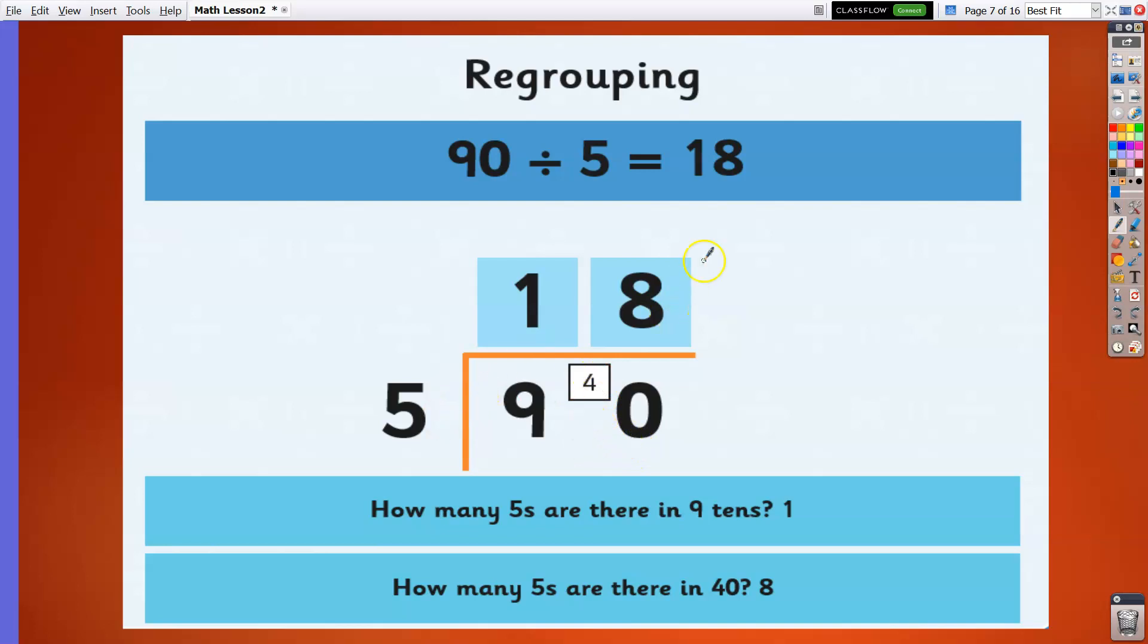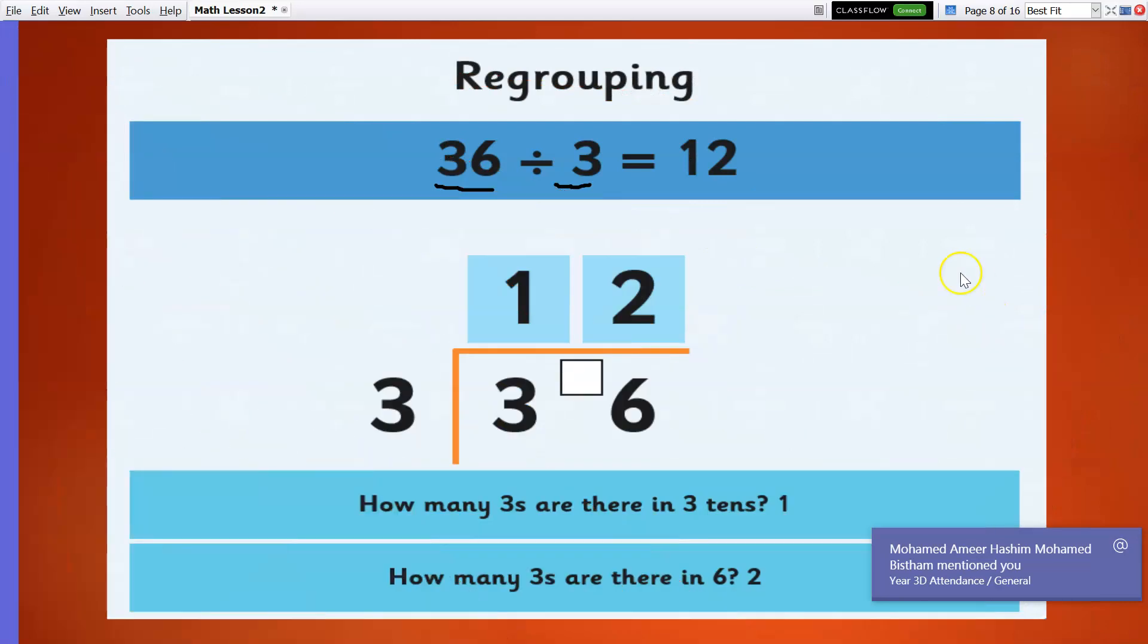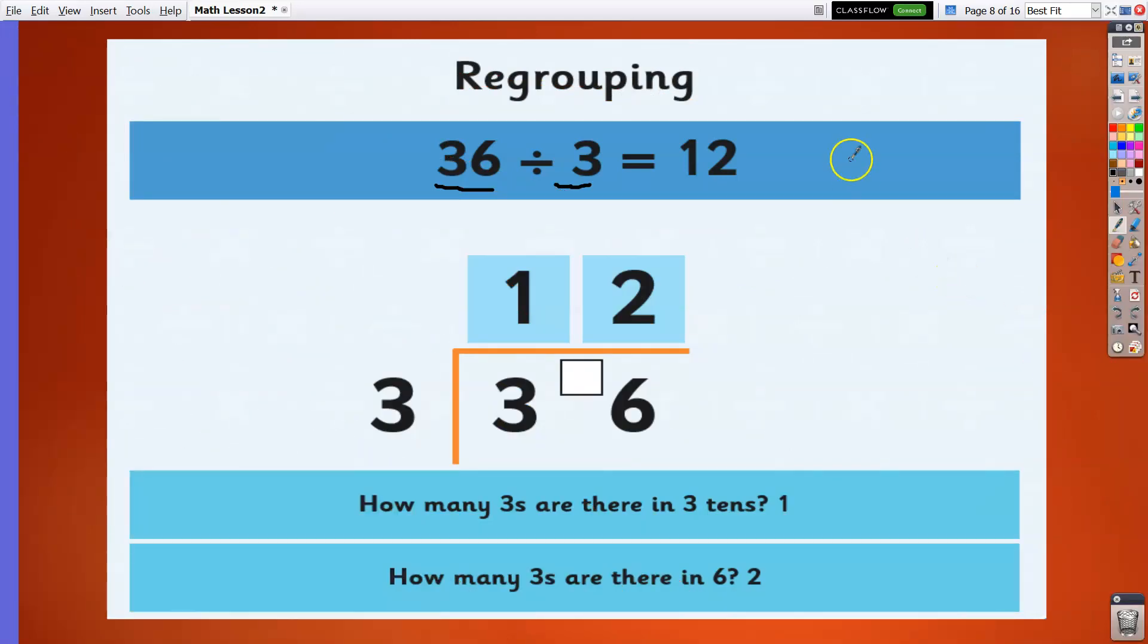And finally we have 36 divided by 3. So 36 is our dividend, inside the box, and our divisor. Now we can directly divide them. 3 divided by 3 is 1. Since there's no remainder, we're not going to write any number in between. Then we have 6 divided by 3, it's 2. So the answer now is 12.